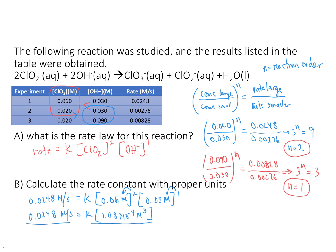Dividing both sides, I get k approximately equal to 2.30×10² with correct units. The molarity units: M/s divided by M³ gives M⁻² s⁻¹. So the units of the rate constant are molarity to the minus 2 inverse seconds, because we have a third-order reaction overall.